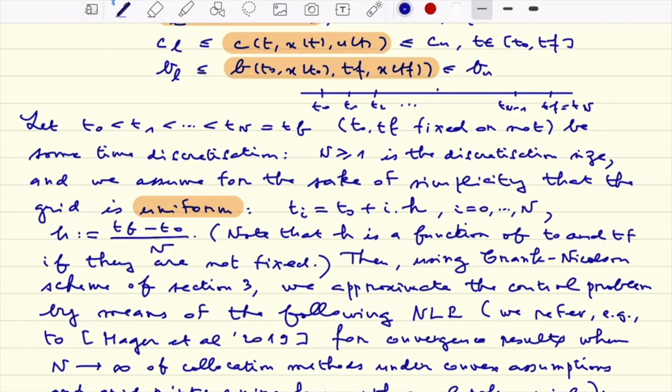And clearly we just assume that between ti and ti plus one the step size h is constant. So h is just equal to the ratio of tf minus t0 divided by N.